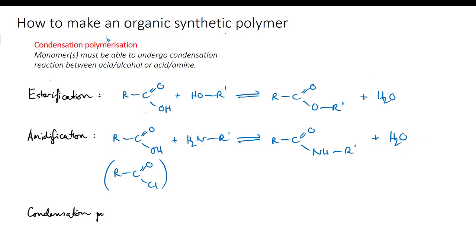In order for this to result in a chain, you either need a single monomer that contains both of the functional groups, or you need two different monomers, each with two identical functional groups.